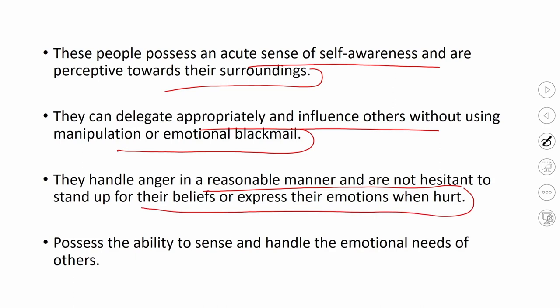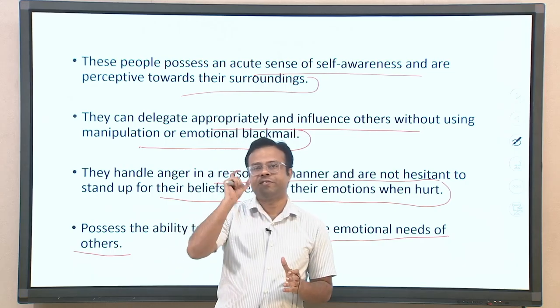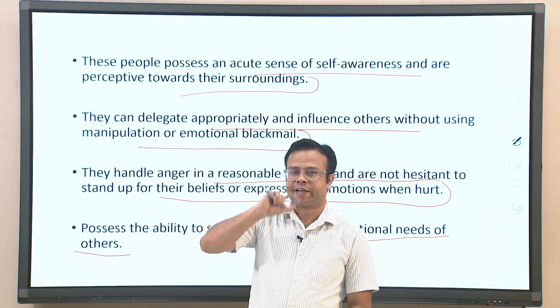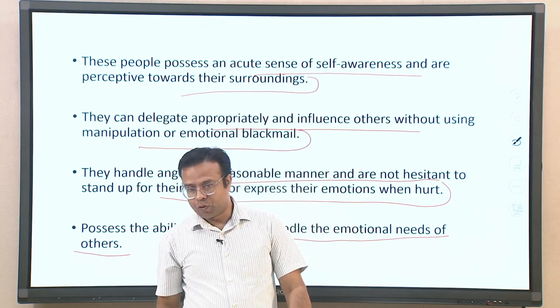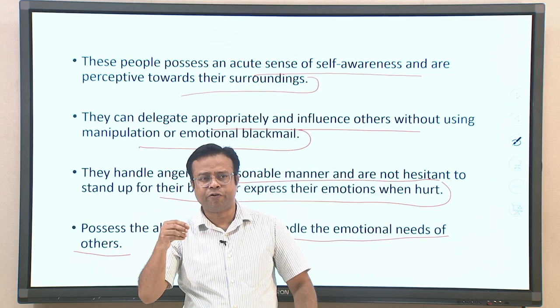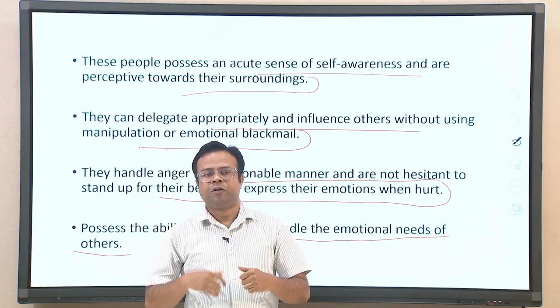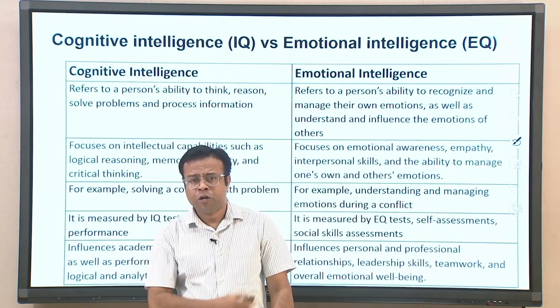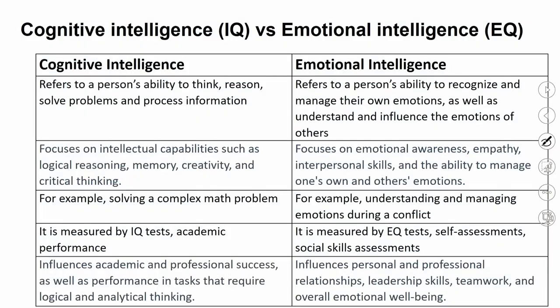People with high emotional intelligence also possess the ability to sense and handle the emotional needs of others. They have higher empathy and compassion. These are possible signs indicating higher emotional intelligence, and we can clearly see some people are high on it and some are low — reflecting individual differences.